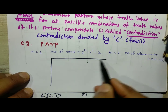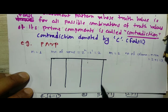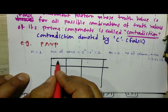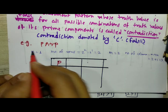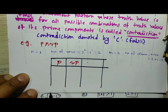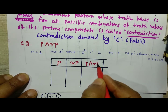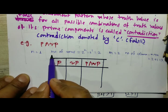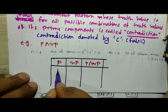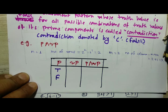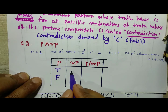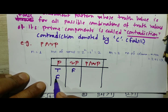The three columns are: P, negation P, and P ∧ ¬P. With 2 rows, P takes values true and false alternately. Negation of P: if P is true then ¬P is false; if P is false then ¬P is true.